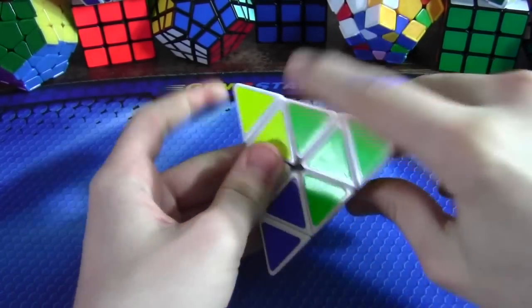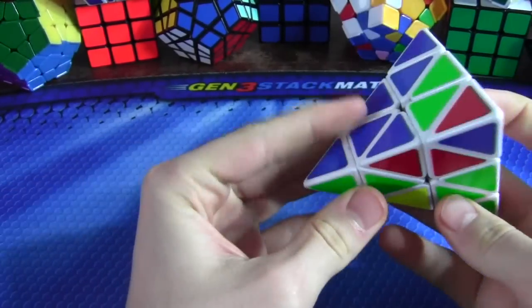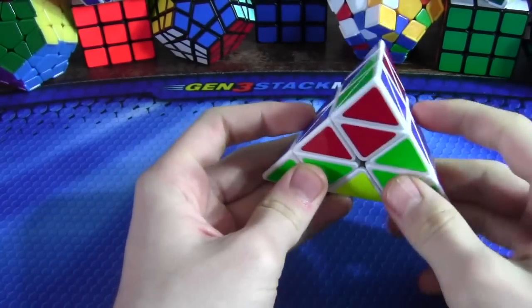I started off by fixing these two tips and this center, and then moving this center in. And I put that edge and flipped so I knew I could do a last layer algorithm to flip this and solve all of these.